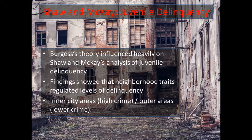Shaw and McKay were greatly influenced by Burgess's theory. They found that characteristics of the area, and not of the individuals living in the area, regulated levels of delinquency. Crime rates were pronounced in the zone of transition and became progressively lower as one moved away from the inner city toward the outer zones. As you start moving outward, you see less and less crime, because people are more collectively efficacious.